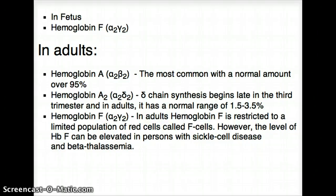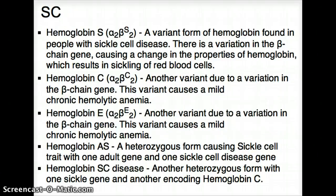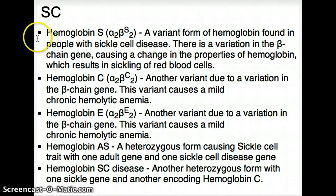The other types of hemoglobin we have to know include sickle cell. Hemoglobin AS is the heterozygous form of sickle cell disease, so it's called sickle cell trait — not sickle cell disease — because there is no sickling of the cells. In order to have sickling of the cells, you need to have homozygous sickle cell disease, which is hemoglobin SS.